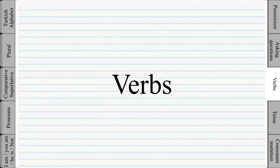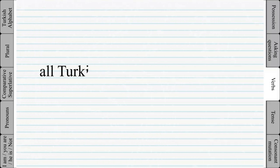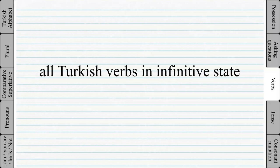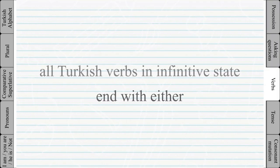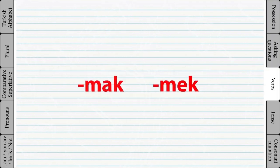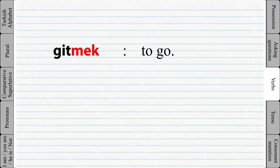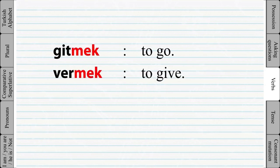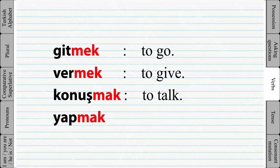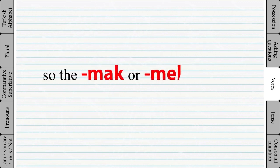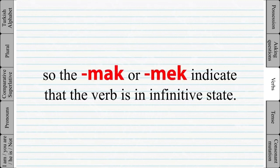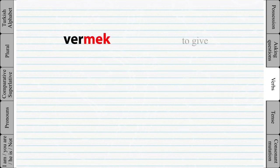Verbs: all Turkish verbs in their infinitive state end with either -mak or -mek. For example: gitmek, vermek, konuşmak, yapmak. The -mek or -mak indicates that the verb is in its infinitive state. To get the root of a verb, just remove the -mak or -mek at the end.